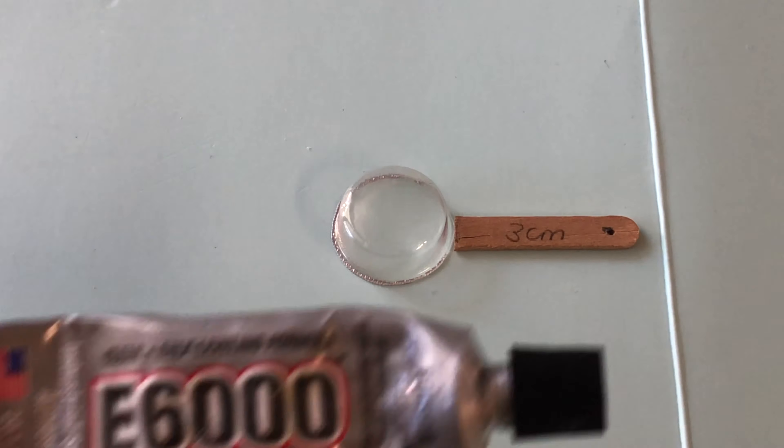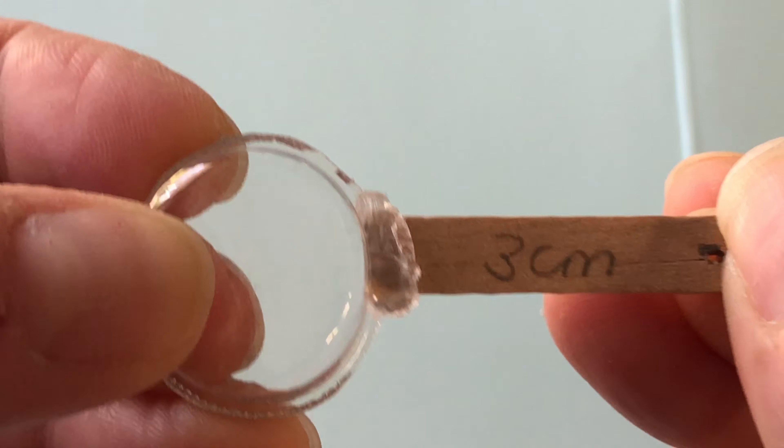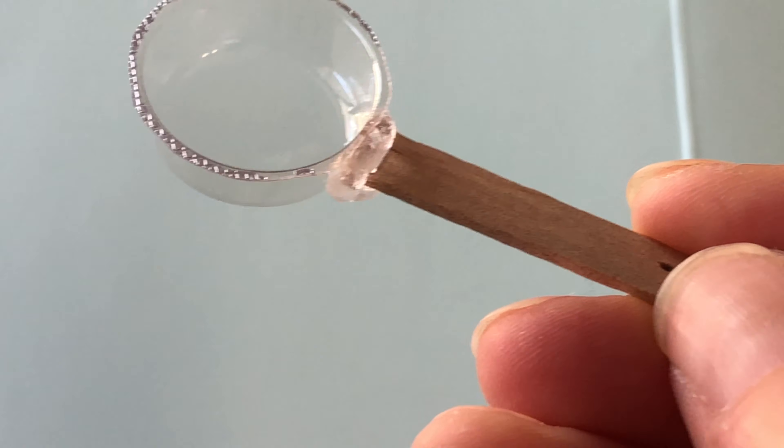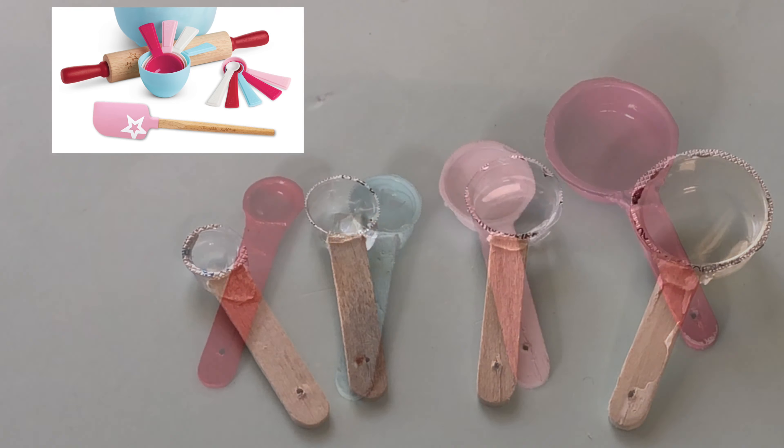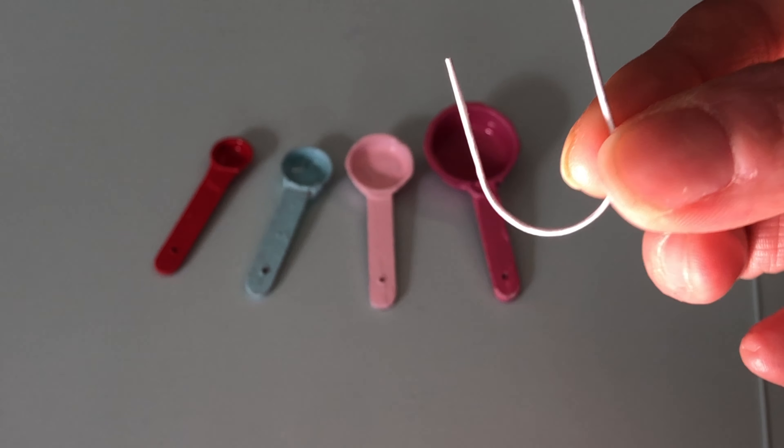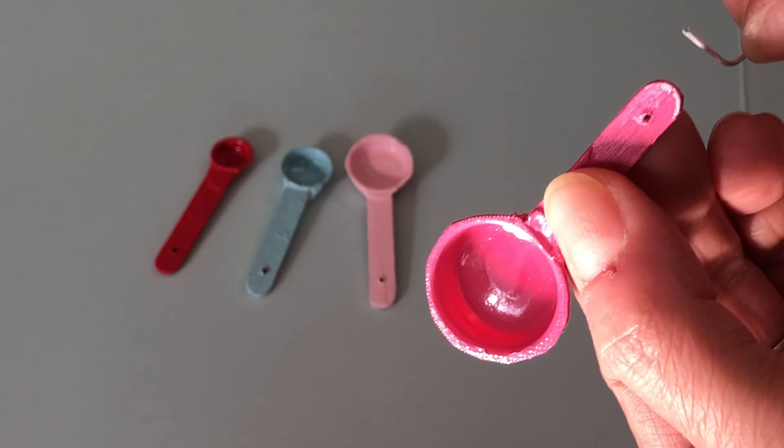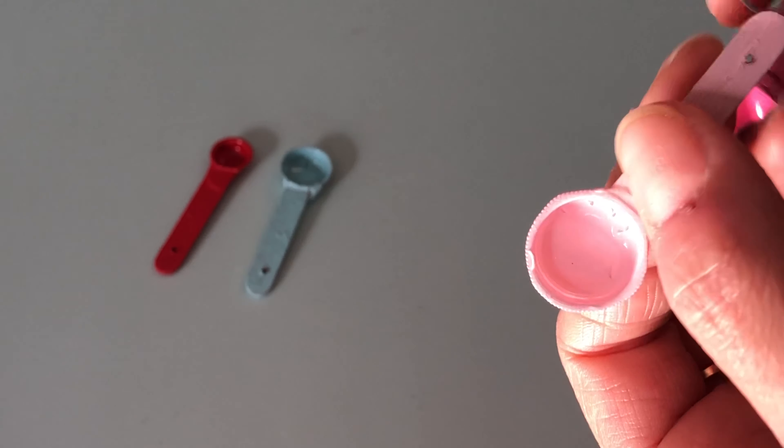To join the spoon and handle, we used strong E6000 glue, but you can also use hot glue for this step. Paint your measuring spoons. We chose to use spray paints in colours that matched AG's Baking Essentials set. Next, take your florist wire and thread on the spoons, placing the biggest first and finishing with the smallest spoon.